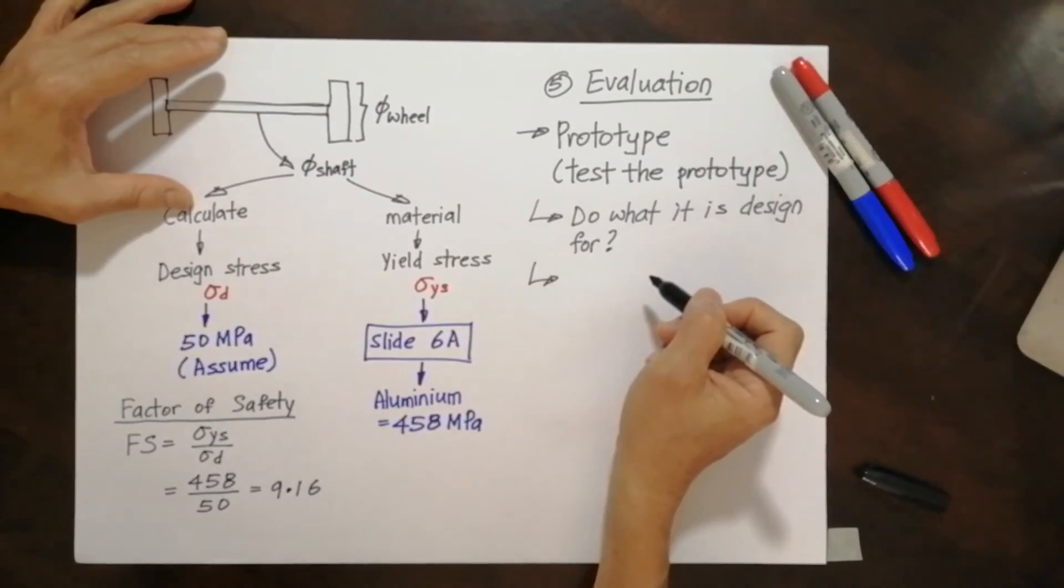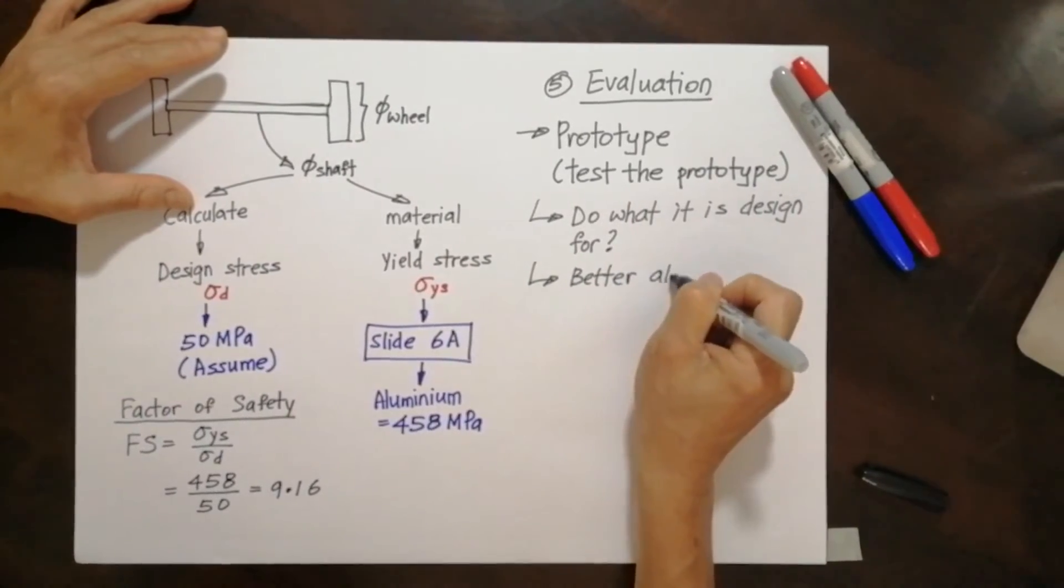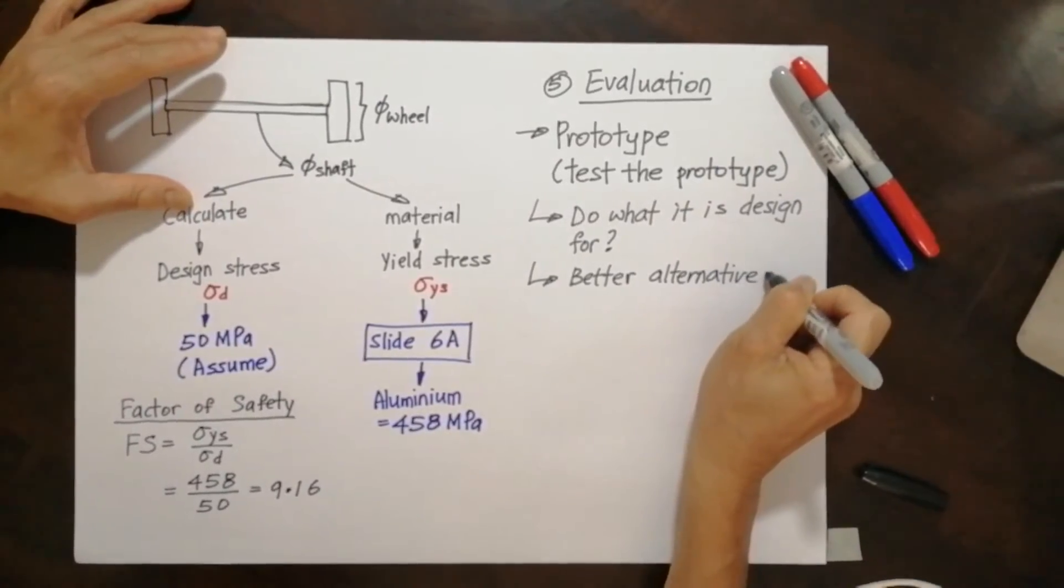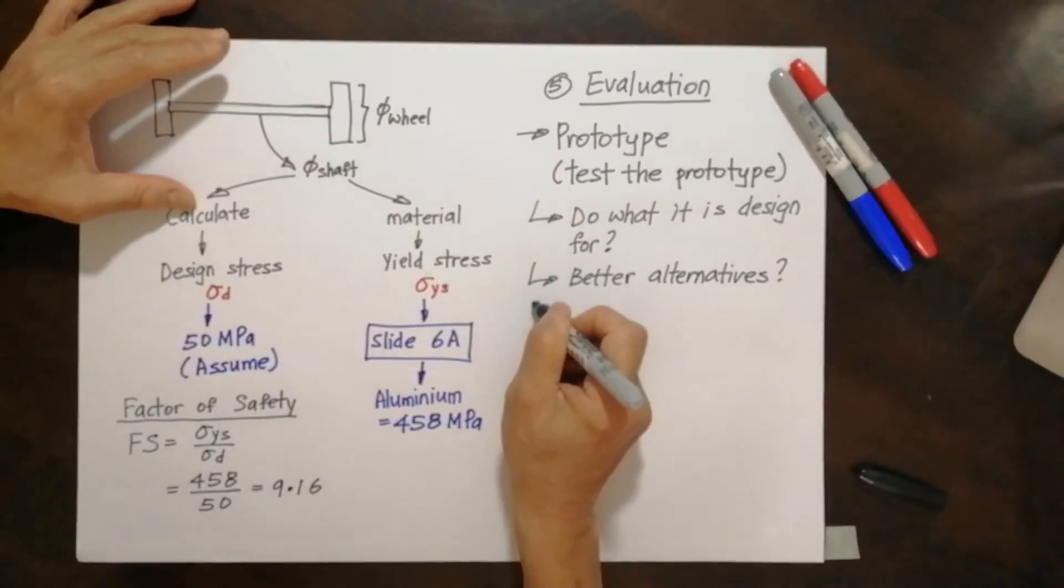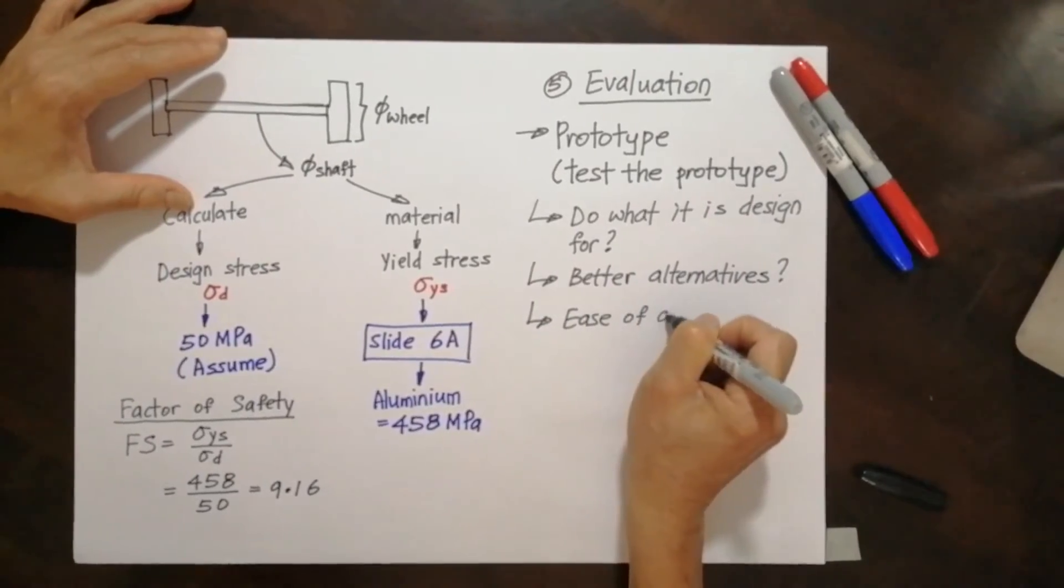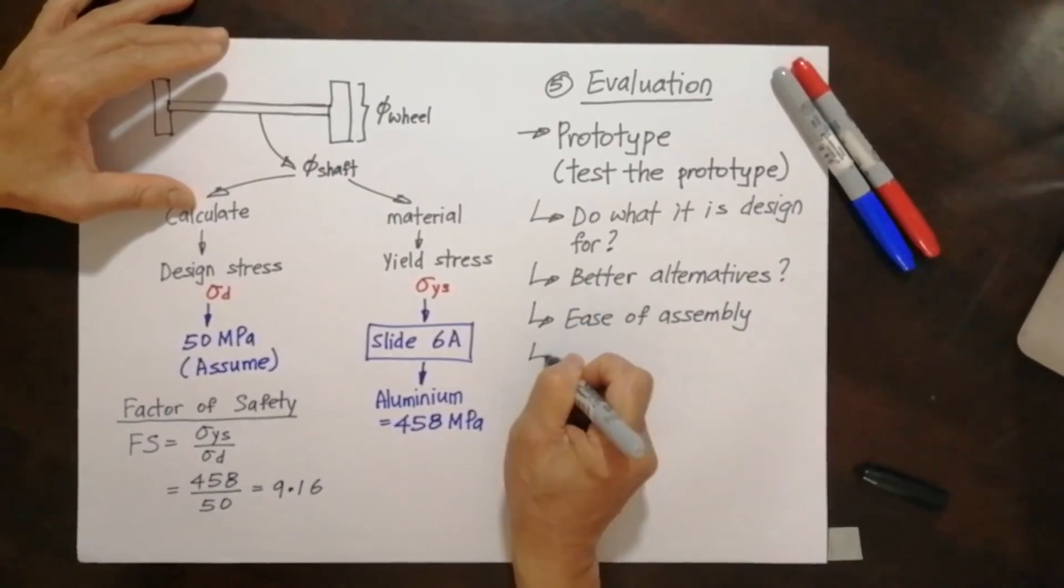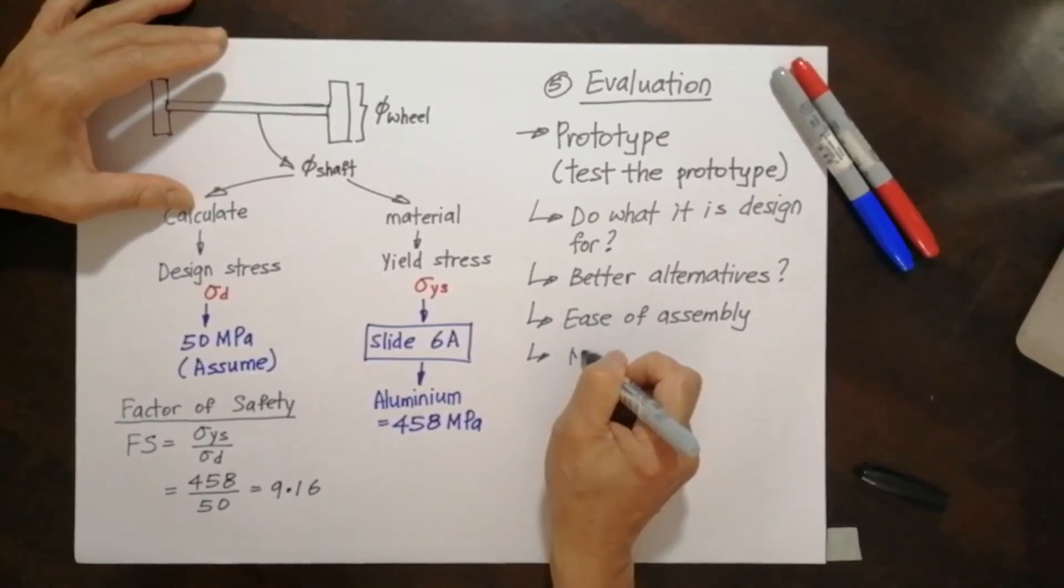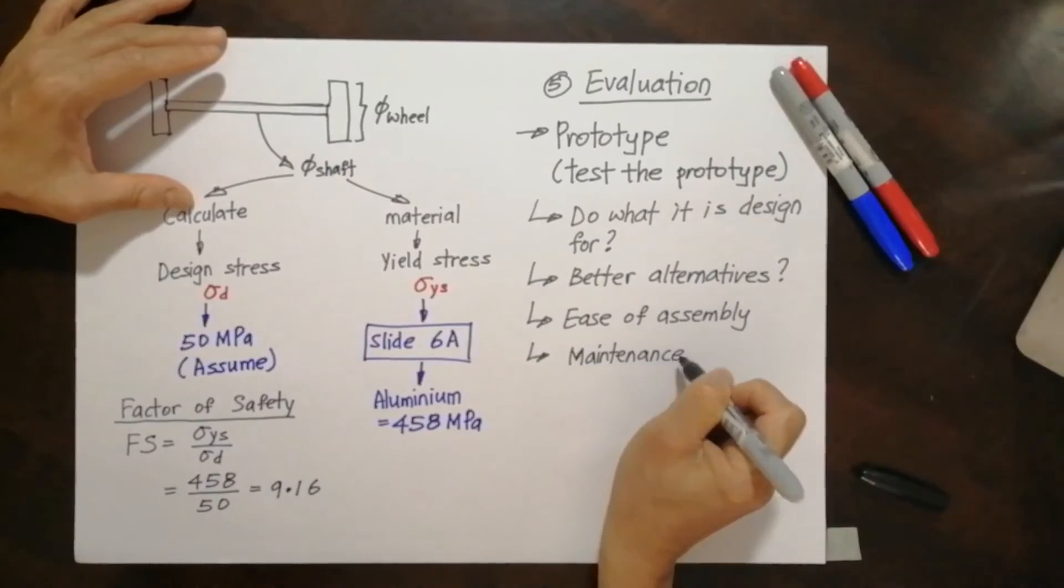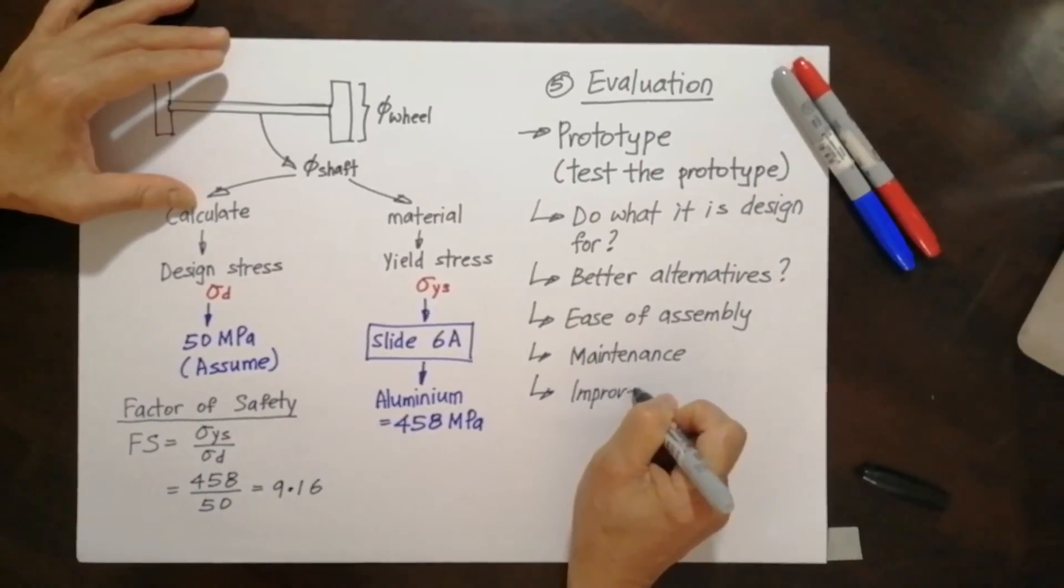Common sense. You don't build something and then say you can do that, but you must be sure, test it to make sure it can do what it's designed for. After that we have to learn, is there any better alternative? Any better alternatives? Ease of assembly, maintenance. Do I need to improve the design further?